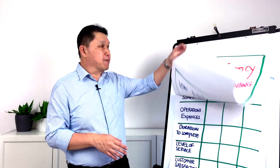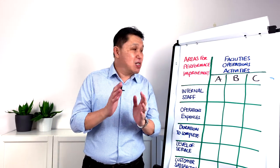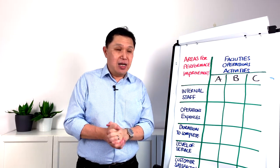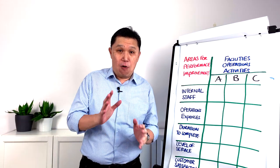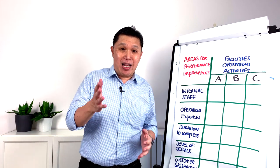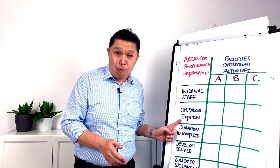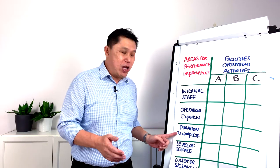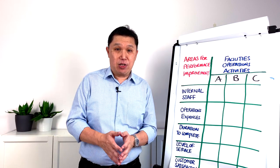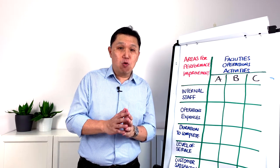First, in order to justify implementing technologies in FM, we must first understand which are the areas for performance improvement. Here are five examples — you may contextualize to your environment depending on the industry you are in. For example: internal staff, operation expenses, duration to complete, level of service, and customer satisfaction. The criteria here depends on what matters most to your organization.